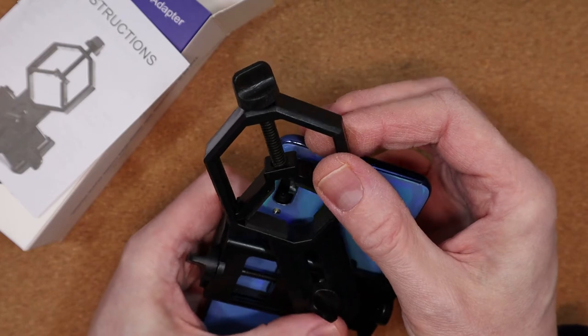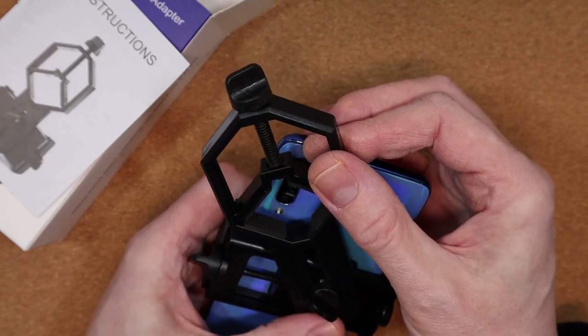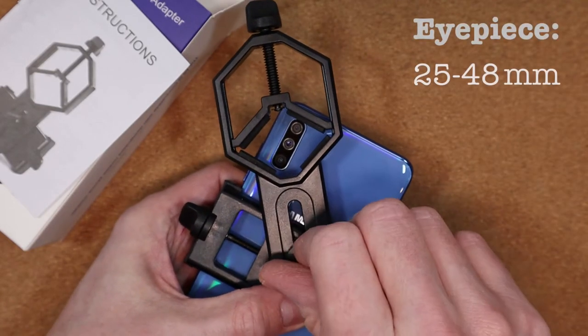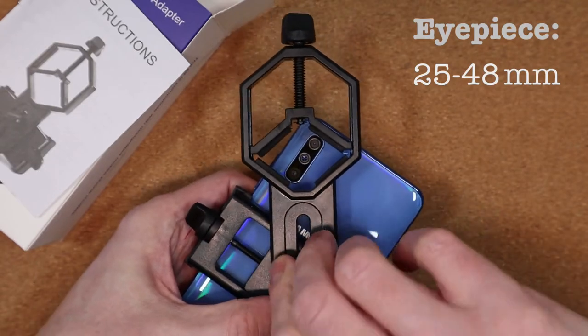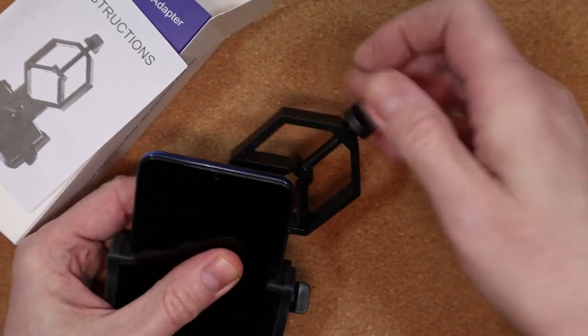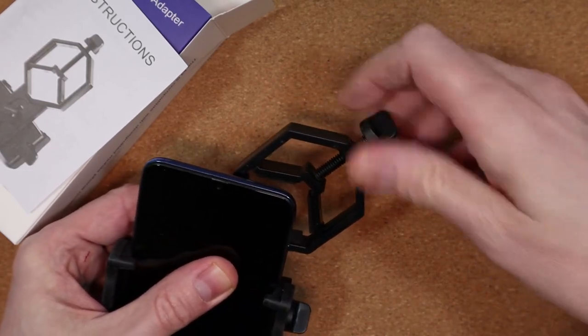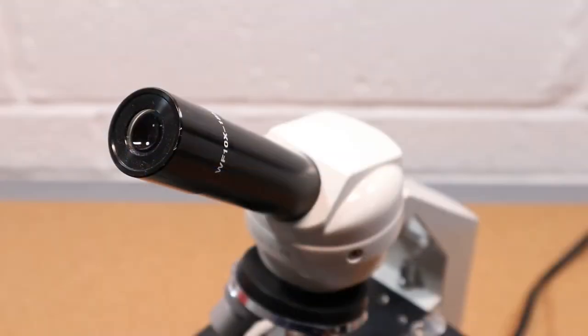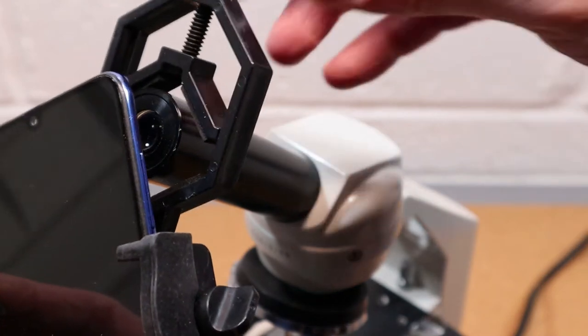Now talking of eyepieces, the instructions state that the adapter will fit any with an outer diameter of between 25 and 48mm. Once you tighten up the second dial, you can open up the eyepiece clamp by turning the third and final dial. It's now time to get the adapter connected to the eyepiece of your device, a microscope in my case.